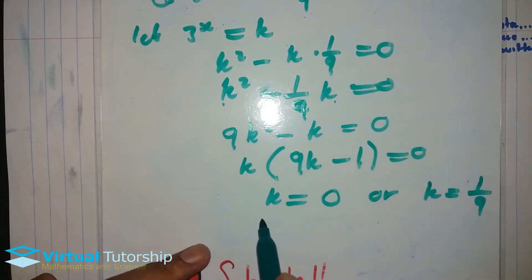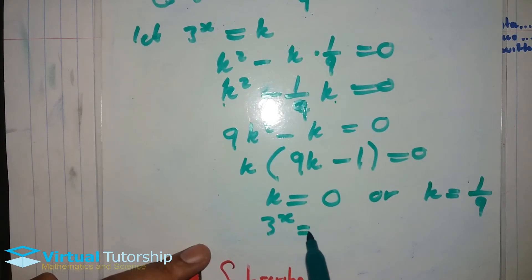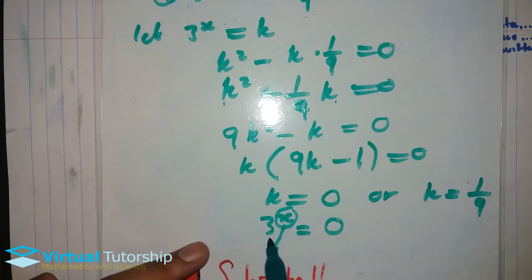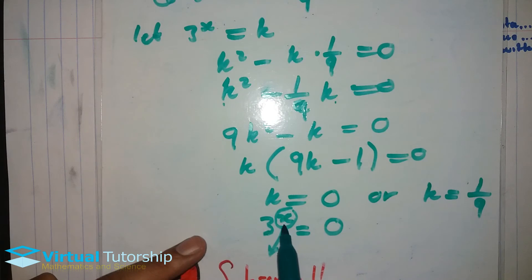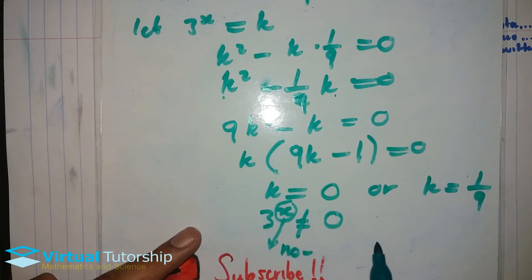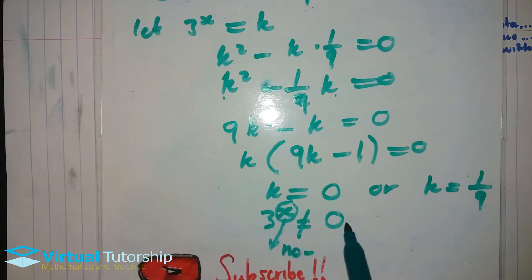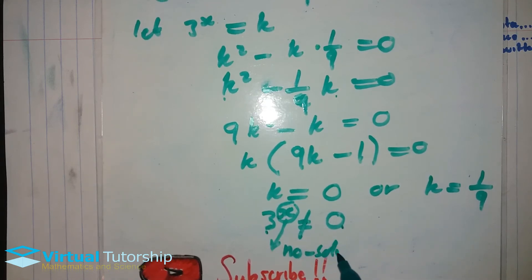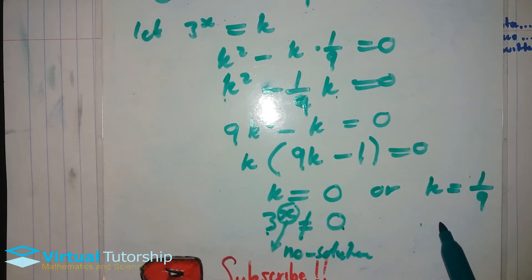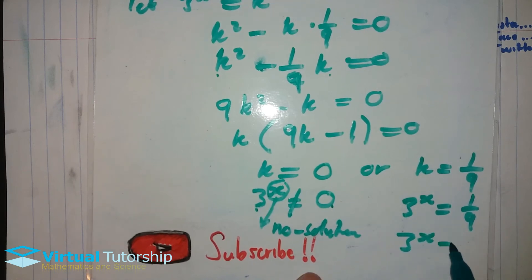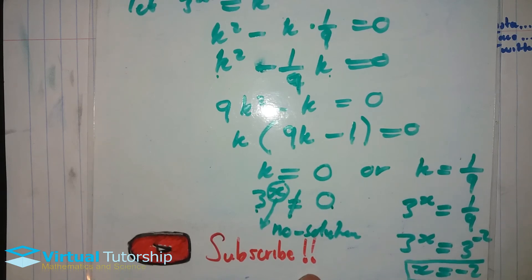So 3 exponent x — remember, solving for x — equals 0. For any x value, substituting into 3 exponent x will never give zero. So this is no solution. For the next: k equals 1 over 9. Remember, rewrite 1 over 9 as 3 exponent minus 2. So x is equal to minus 2. That's my x value.